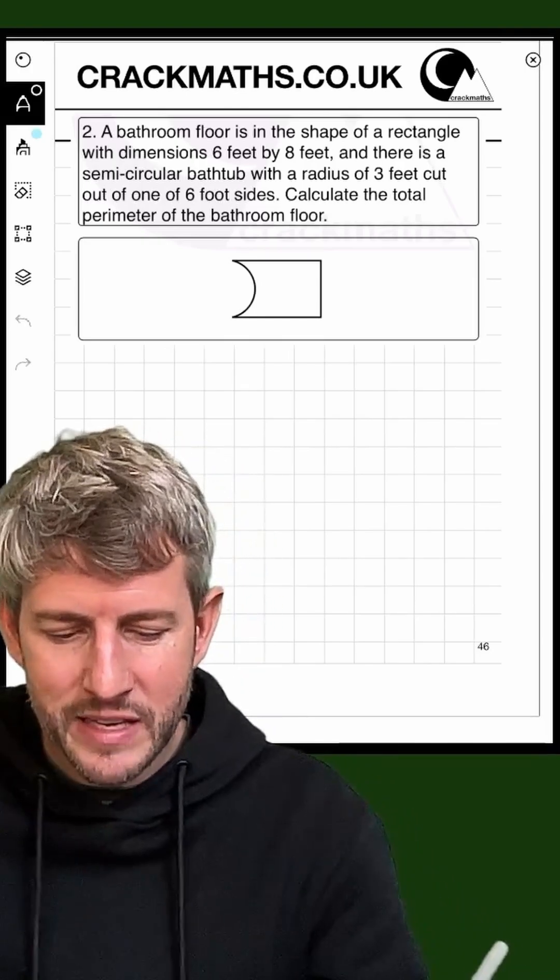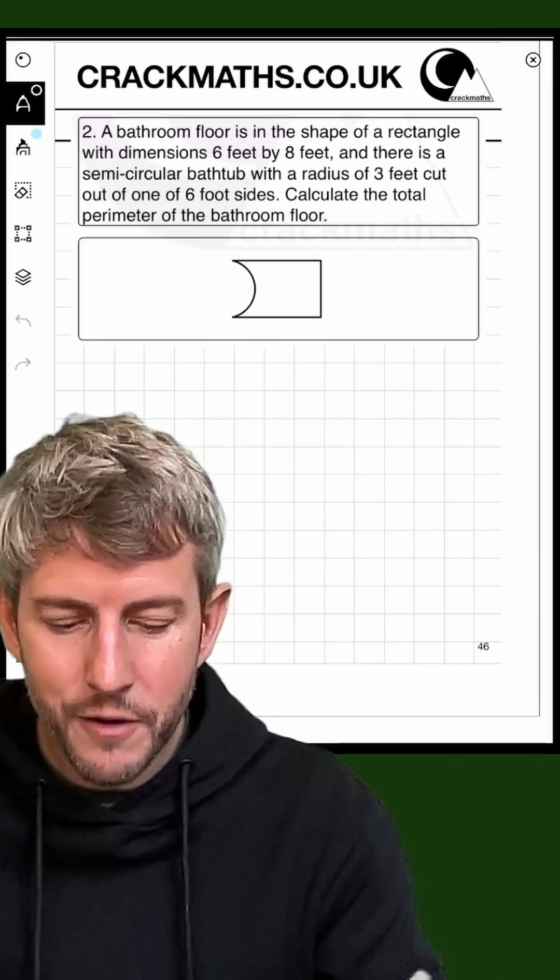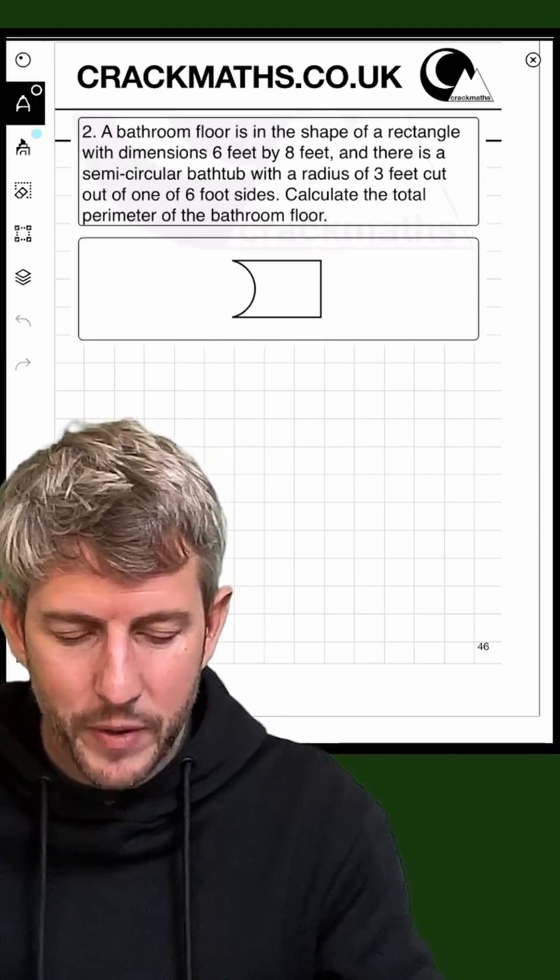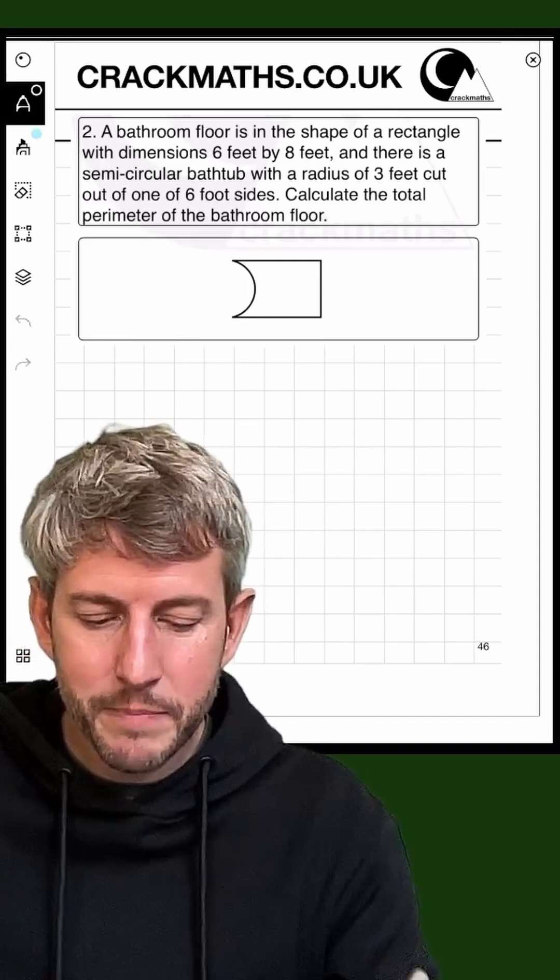Okay, so let's put on these dimensions first. First of all, we have got it 6 feet by 8 feet, and there is a semi-circular bathtub with a radius of 3 feet cut out of one of the 6 foot sides.